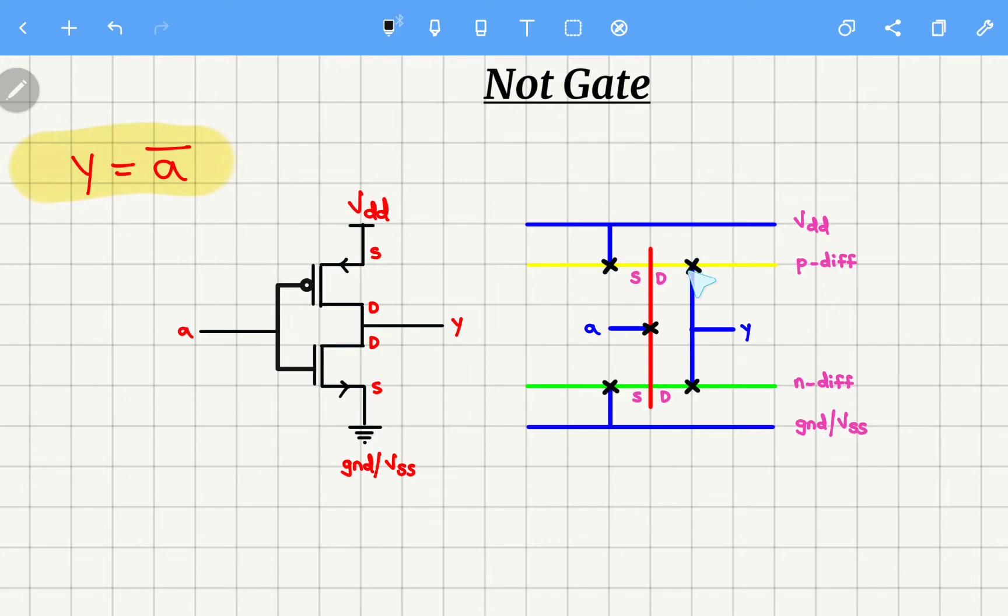Next, these two drains are connected. So the drain of PMOS and the drain of NMOS are connected together.